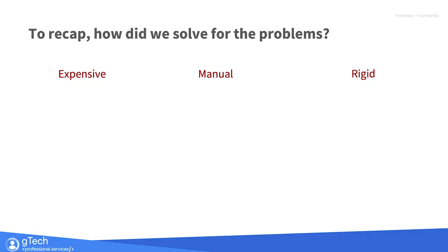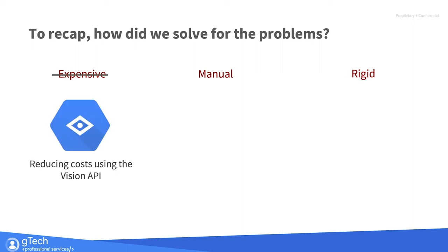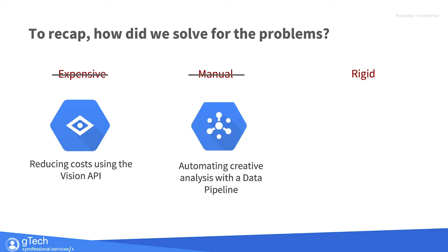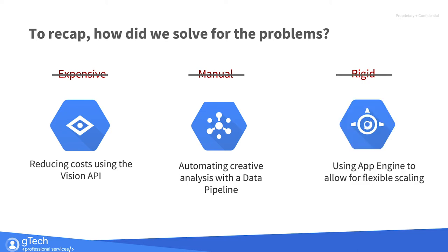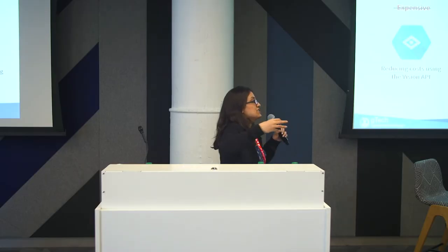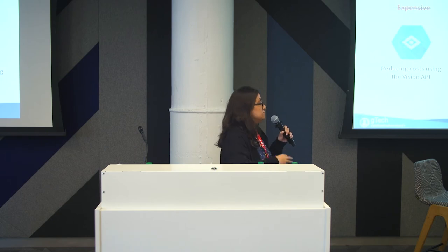So how did we actually solve for the problems Cory was talking about? We use the Vision API to make this less expensive and less manual. We've created the pipeline so it runs at scale. Finally, we've addressed rigidity by using the App Engine component — the army of computers — to allow for flexible scaling. And if you wanted to analyze something different next time, say logos instead of faces, that's clearly doable with the format we have.